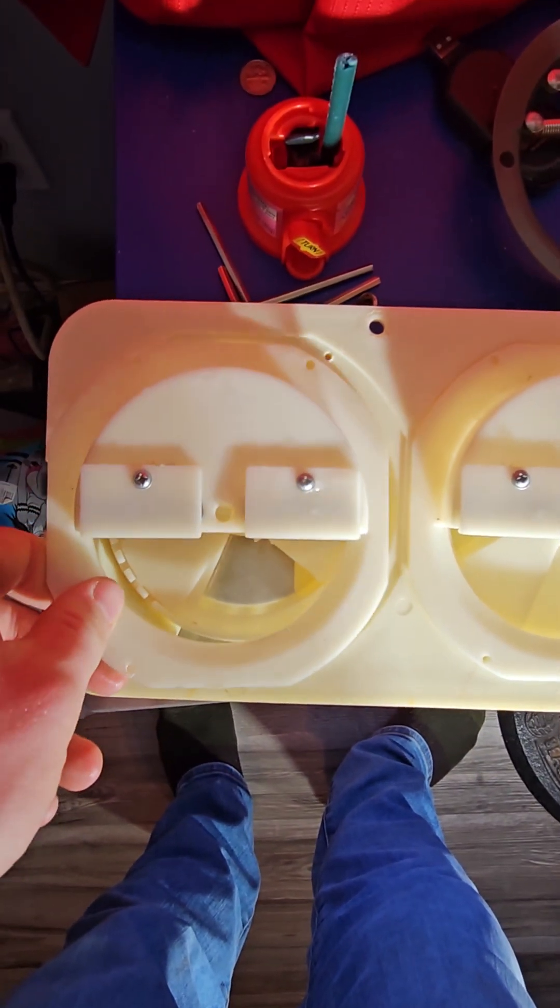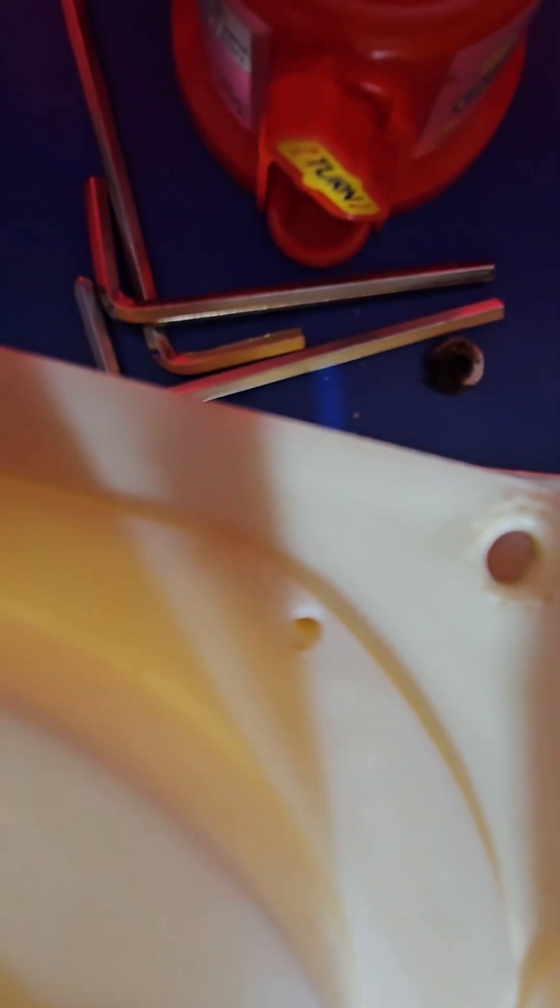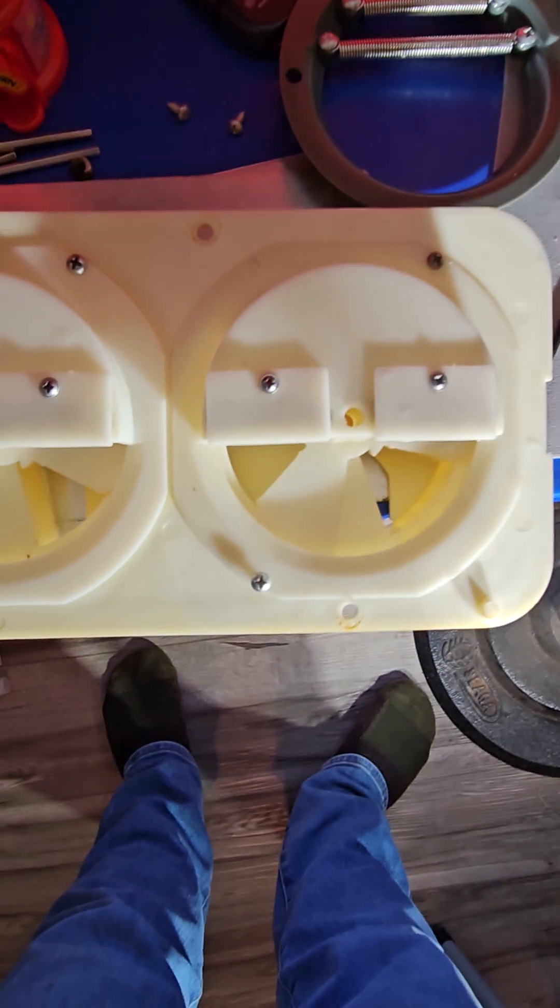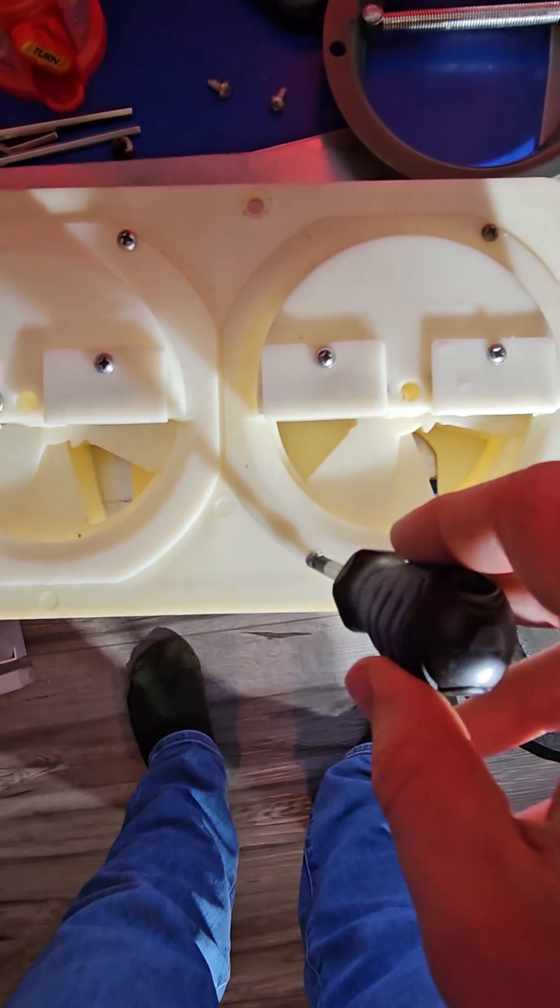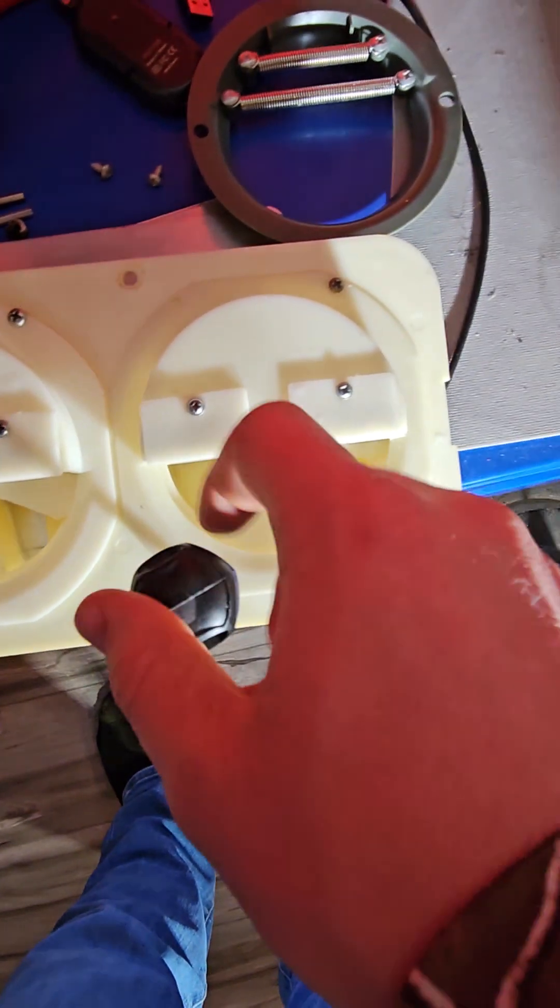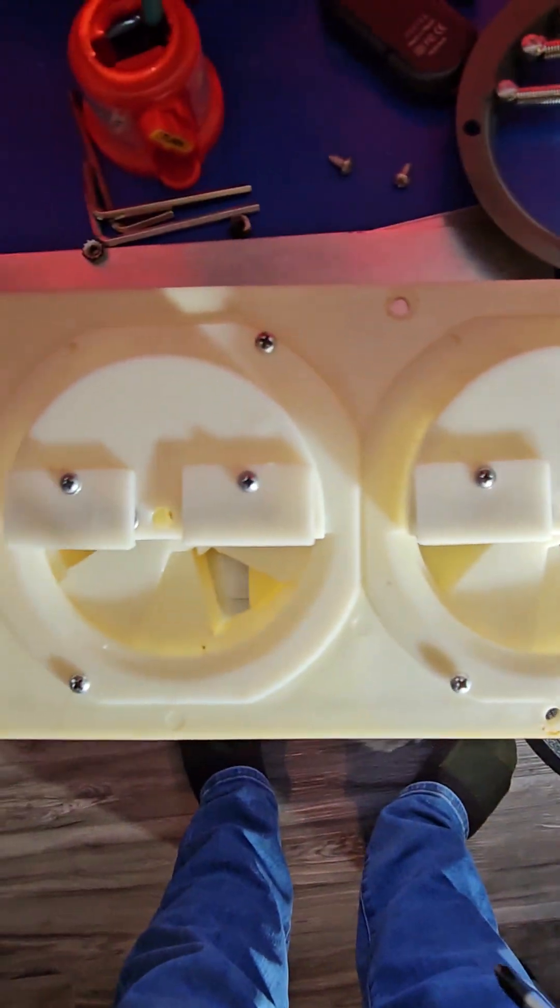And get this thing right here and set it on there to where the screw holes line up in the diagonal corners. All right, then you want to take your screwdriver and put your screws back in the diagonal corners on each one of your candy wheels.